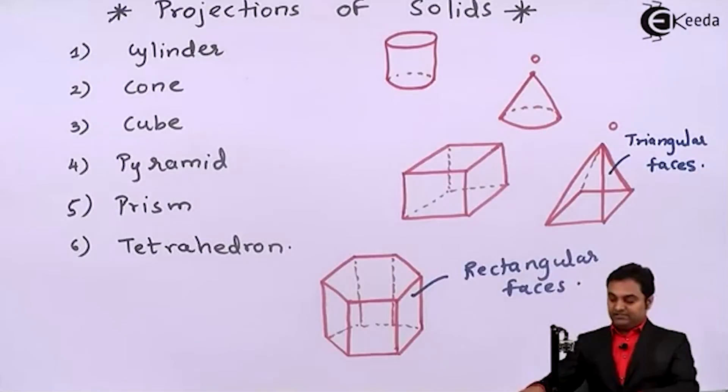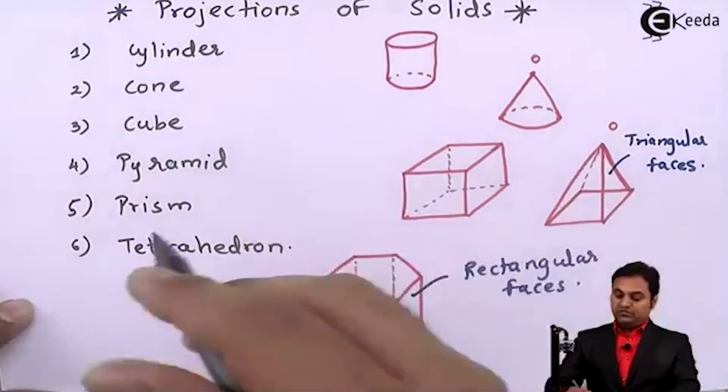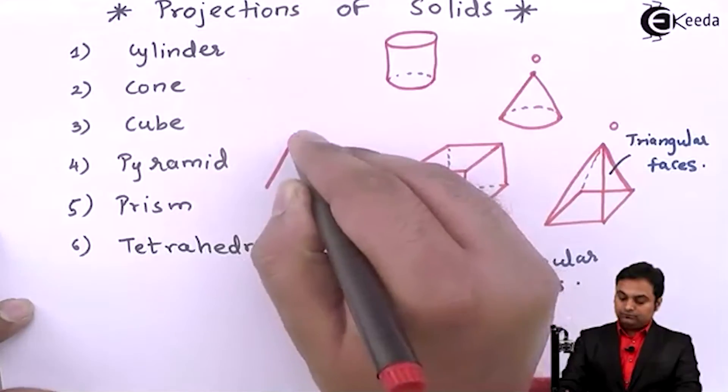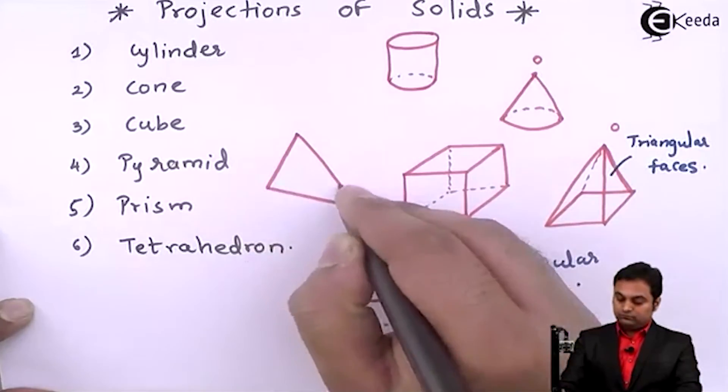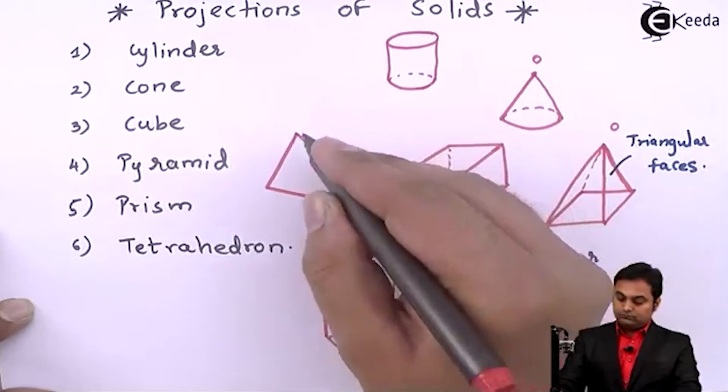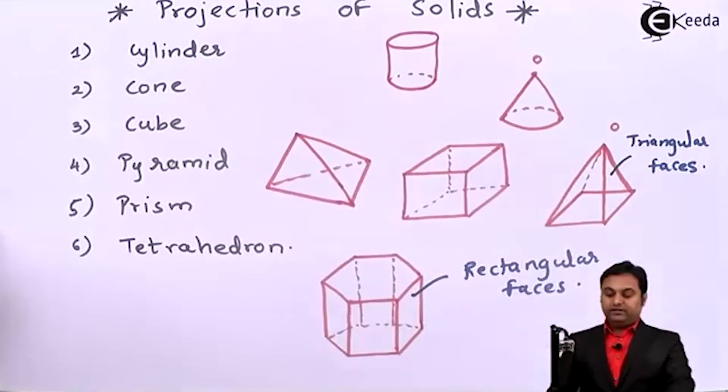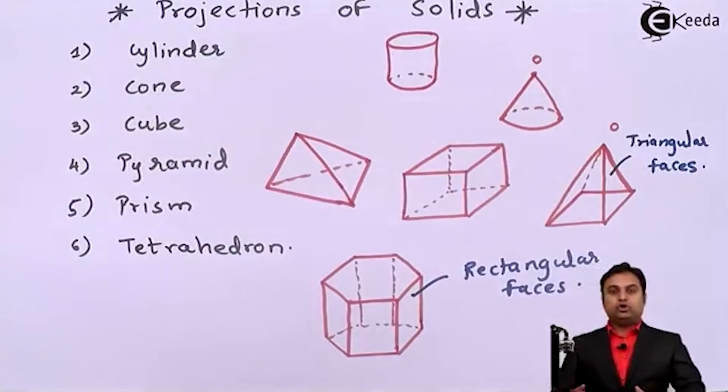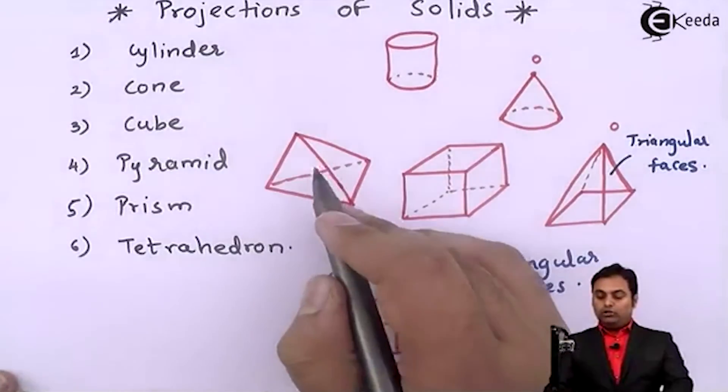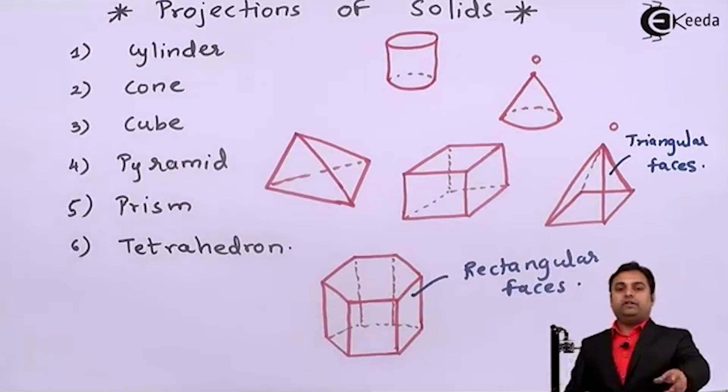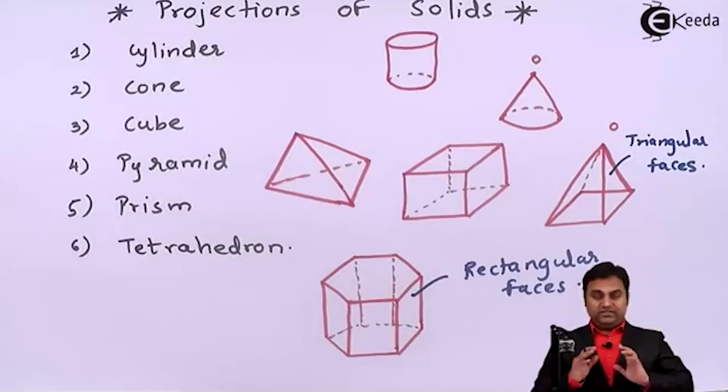Next there is tetrahedron which is like a triangular pyramid. Tetrahedron is that solid in which all the faces are triangular as well as the base is triangular. It means we keep tetrahedron anyhow we are going to get the same shape.